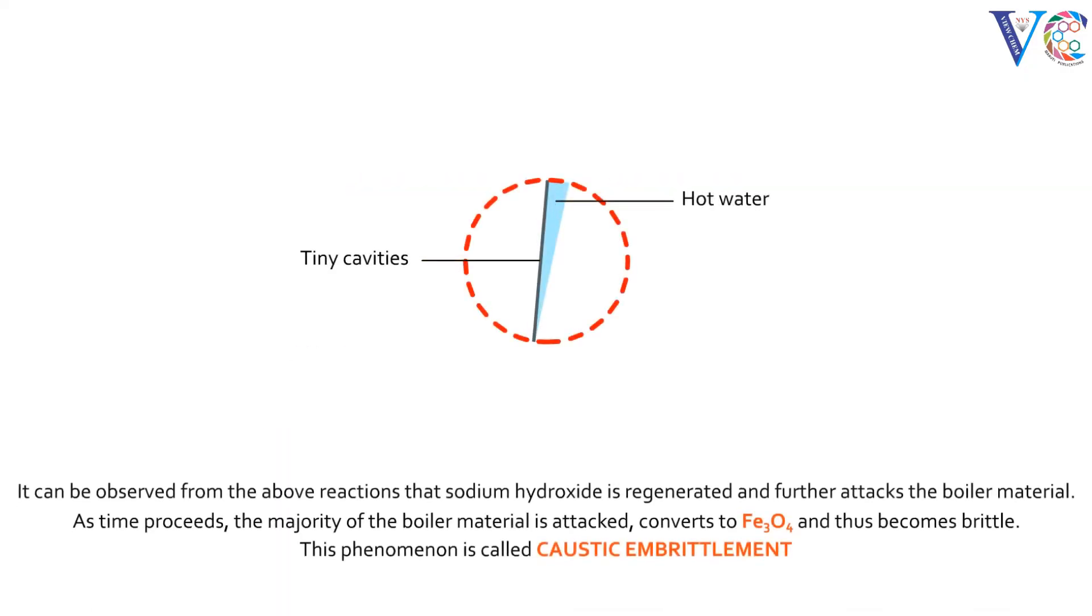It can be observed from the above reactions that sodium hydroxide is regenerated and further attacks the boiler material. As time proceeds, the majority of the boiler material is attacked, converts to Fe3O4 and thus becomes brittle. This phenomenon is called caustic embrittlement.